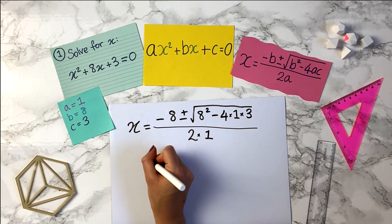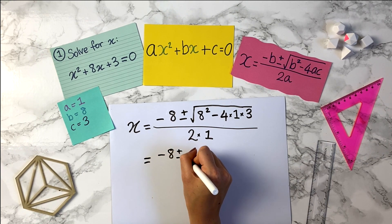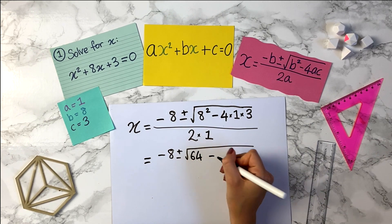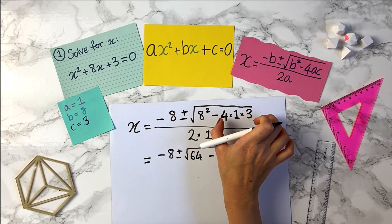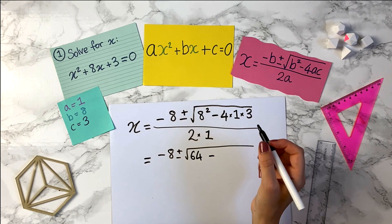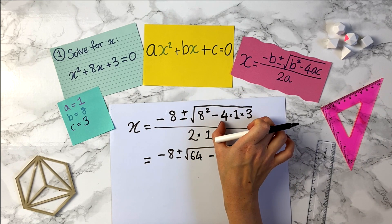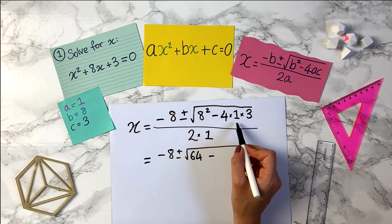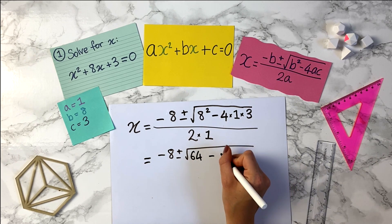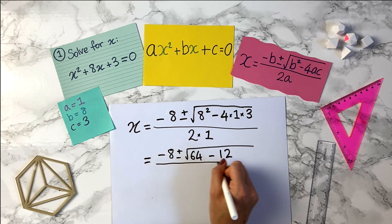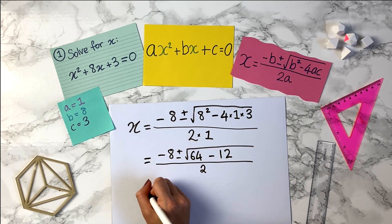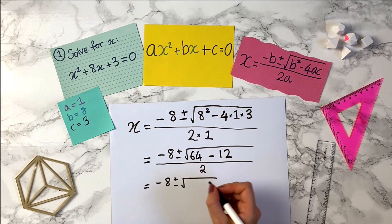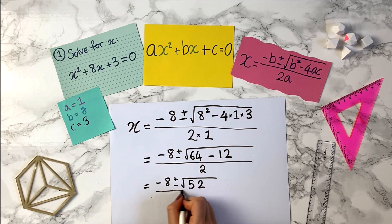This is looking good, so we can simplify: x equals negative 8 plus or minus the square root. So let's work out this bit here — 8 squared is 64, minus, and then we want to do this multiplication, so remember the order of operations. We square first, then multiply these together before subtracting. So 4 times 1 times 3: 4 times 1 is 4, 4 times 3 is 12, so 64 minus 12, all over 2 times 1 is 2. This equals minus 8 plus or minus the square root of 52 over 2.